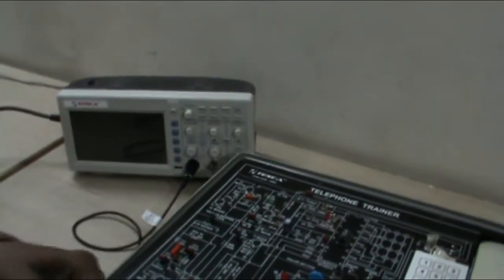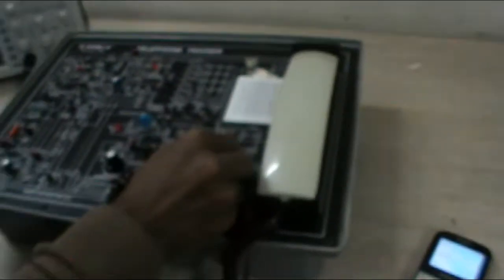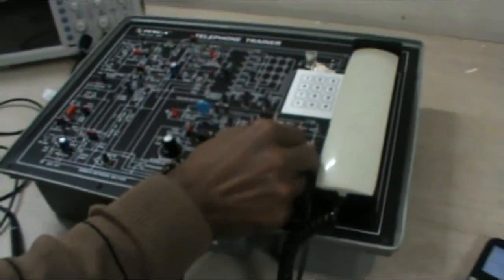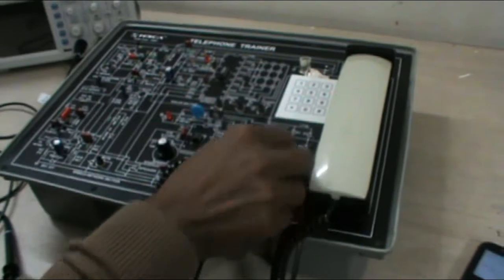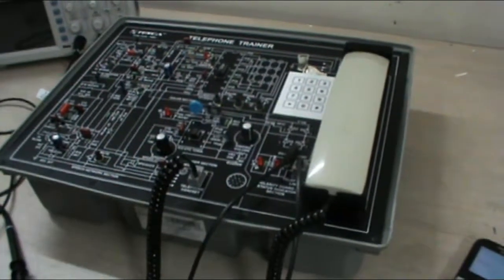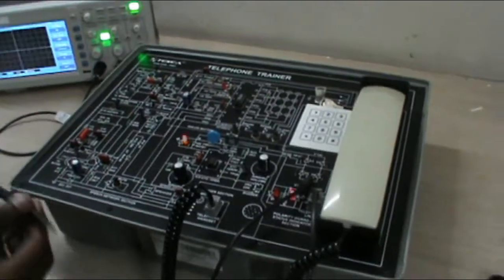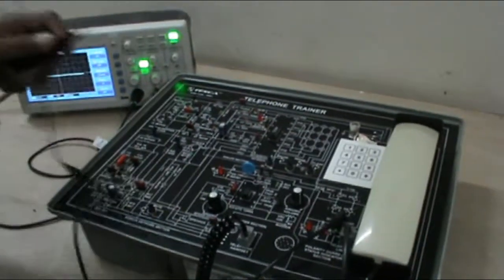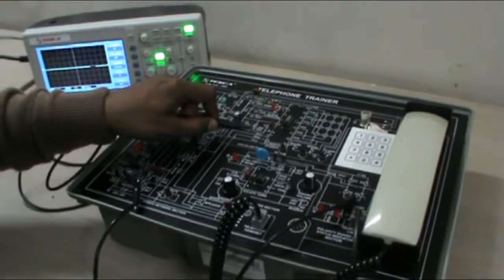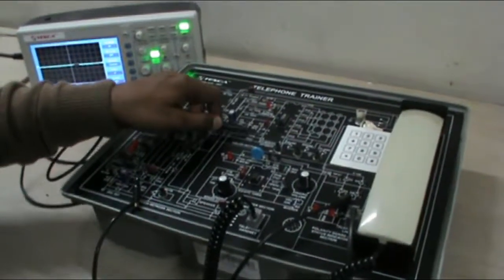This equipment is not supplied with this trainer. Connect the ground at TP 38. For example, we want to check the signal at TP 21.